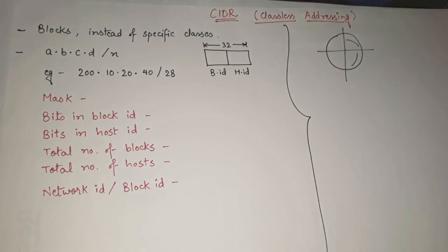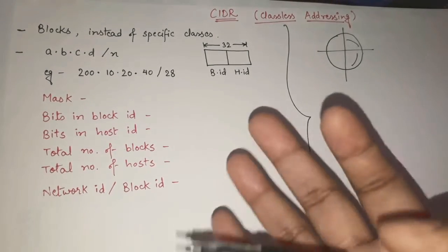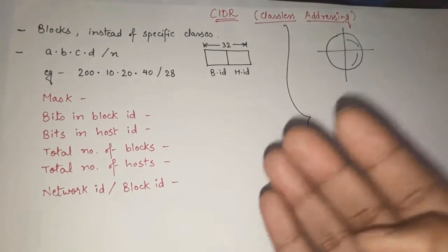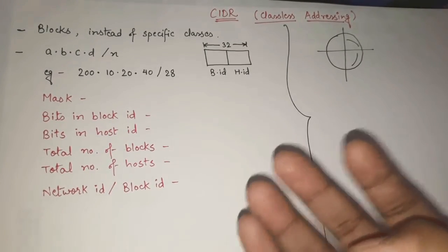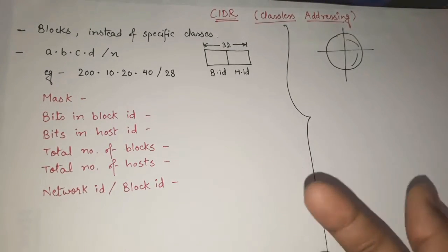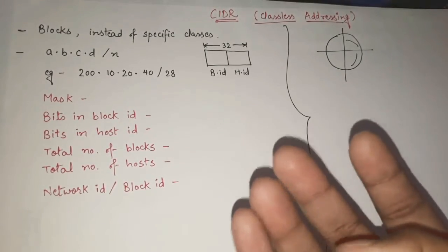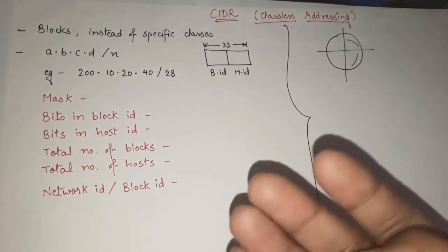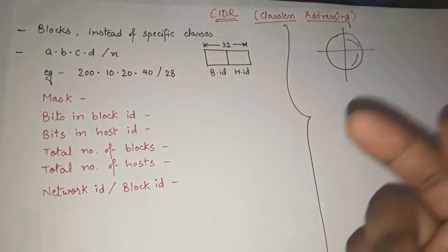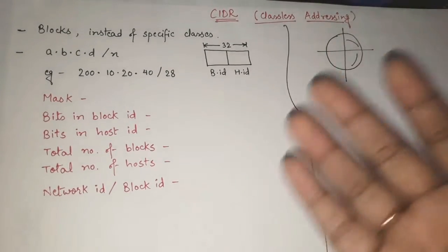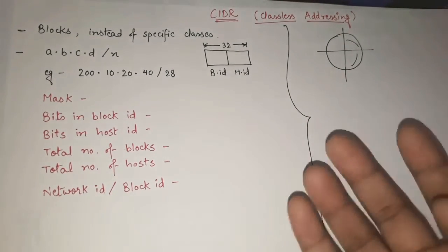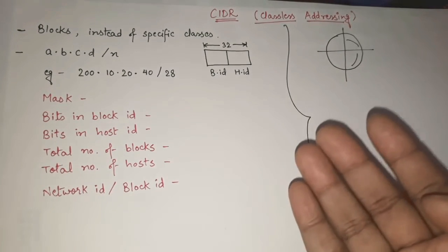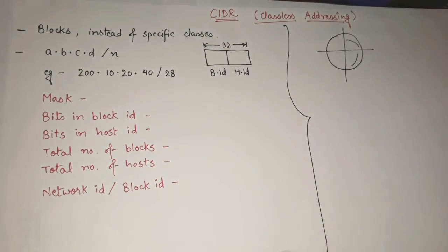In our previous video of computer networks, we have already seen classful addressing in detail. We have seen all about classful addressing — all the classes like class A, class B, class C, class D, and class E addresses, the range of all the classes, host IDs, network IDs, and the prefixes. In case you have not visited that video yet, I will give the link in the description. We have also discussed the differences between classful and classless addressing in that video.